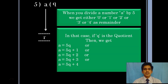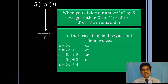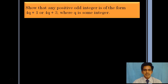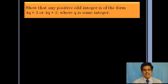When you discuss problems on Euclid's division lemma, you have to keep a special eye on the remainder relative to the divisor. Let us solve one problem based on this. Show that any positive odd integer is of the form 4q plus 1 or 4q plus 3, where q is some integer. In this expression bq plus r, in place of b we have 4 — so the divisor here is 4.